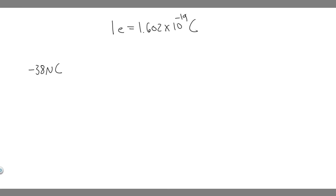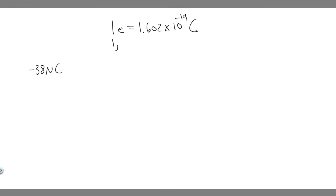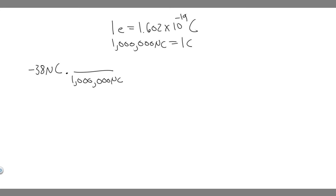So what we want to do is go from microcoulombs to just coulombs. We know that there's 1 million microcoulombs for every single one coulomb. So if we want to convert this to coulombs, you just divide by 1 million microcoulombs. That'll cancel that out and you'll just have coulombs.